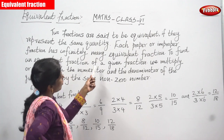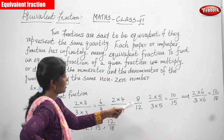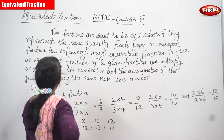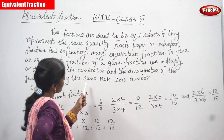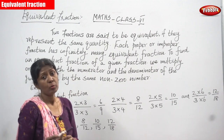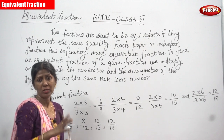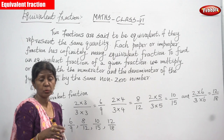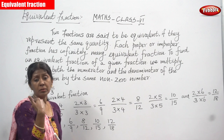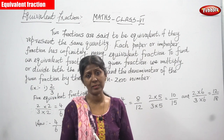To find an equivalent fraction of a given fraction, we multiply or divide both the numerator and the denominator of the given fraction by the same non-zero number. Whatever the fraction you have taken, you have to multiply both the denominator as well as the numerator by the same number.